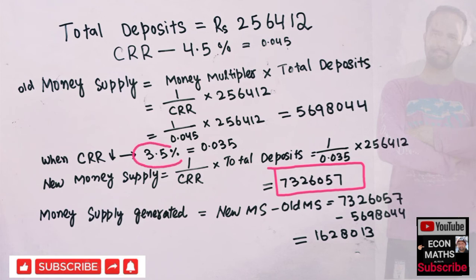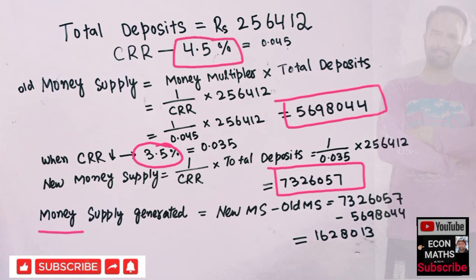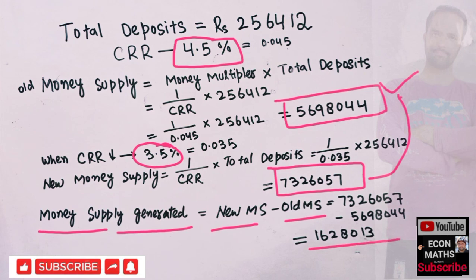This is the old money supply when CRR was 4.5 percent, and this is the new money supply when CRR is 3.5 percent. The additional money supply generated will be equal to the new money supply minus the old money supply. When we subtract these two figures, we get 16 lakh 28,013 as the additional money supply generated when CRR is reduced from 4.5 to 3.5 percent.